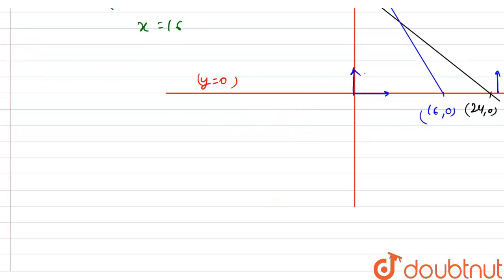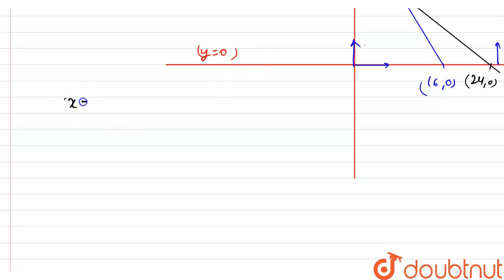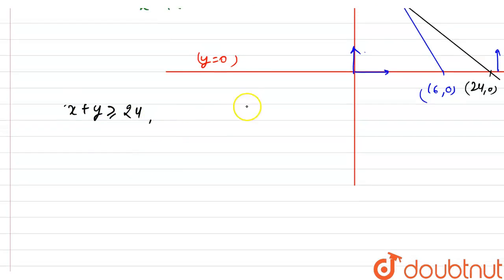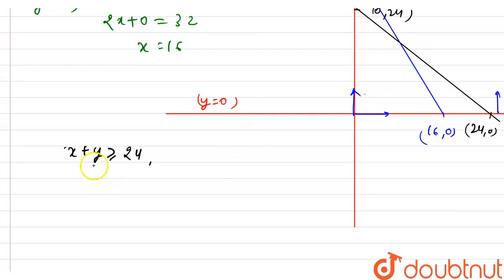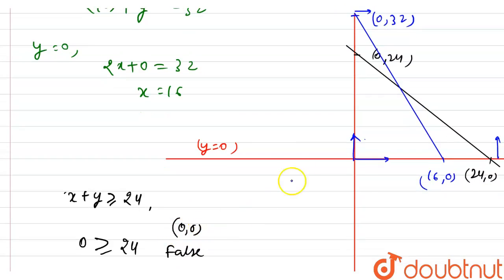Now I'm going to solve for the inequality of the given linear equations. For checking which area is shaded, I put the point (0, 0) into x plus y greater than equals to 24. I get zero is greater than equals to 24, which is false. If it is false, then the shaded area will be away from the origin — meaning above the line.